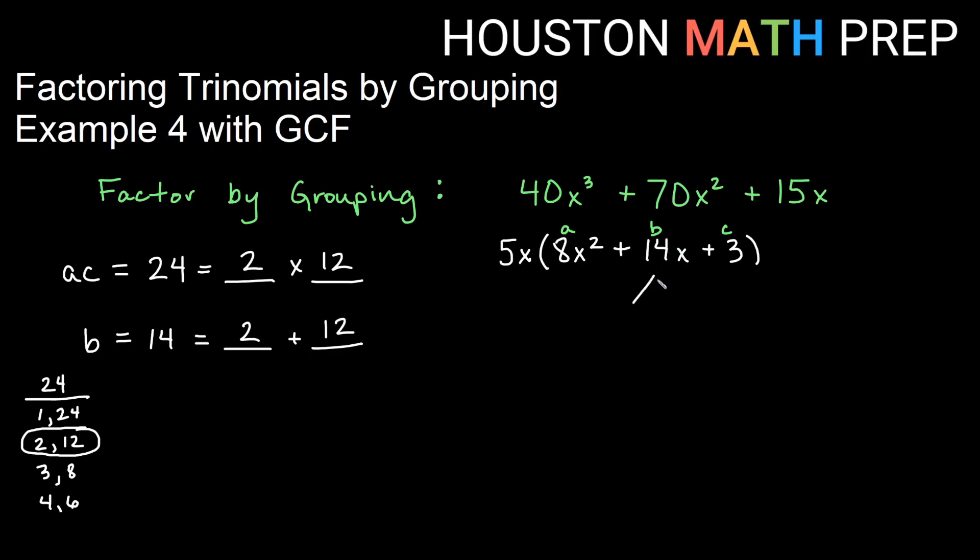So we will regroup our 14x term using 2 and 12. So I'm going to keep the 5x that I had on the outside. Don't forget that's part of our answer, part of our factoring. So I write down my 8x². I'm going to write my 14x as 2x plus 12x. Remember that it must stay a like term with what it was originally. I'll write down my plus 3.